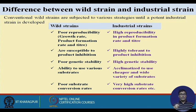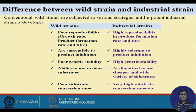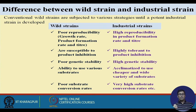Industrial strains have high tolerance to product inhibition. For example, approximately one gram of glucose produces 0.51 grams of ethanol in yeast cells. In early fermentation industries, ethanol was produced at about 7–8%, but nowadays industries produce 14–15%. To achieve this, glucose concentration must be as high as 30%, which increases osmotic pressure on the fermentation broth and can cause shrinkage of the organism.